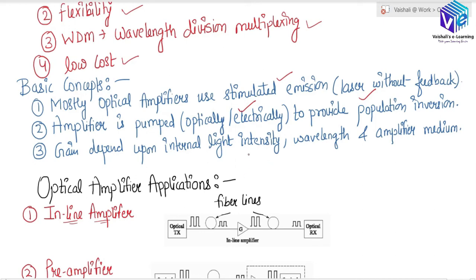The gain of the optical amplifier depends upon the light intensity — specifically the internal light intensity — the wavelength, and the amplifier medium. The gain will depend on all of these factors.